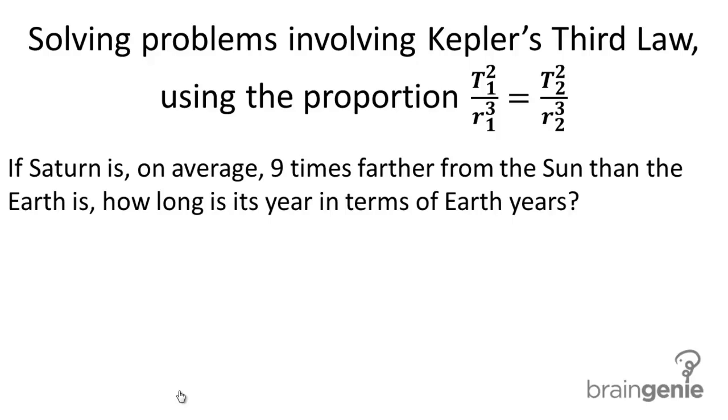Solving problems involving Kepler's third law, using the proportion T1 squared over R1 cubed equals T2 squared divided by R2 cubed.